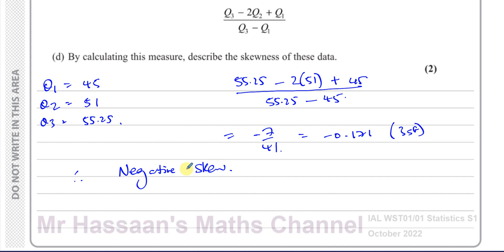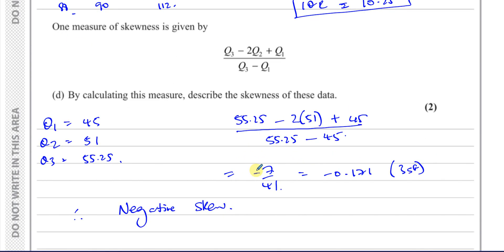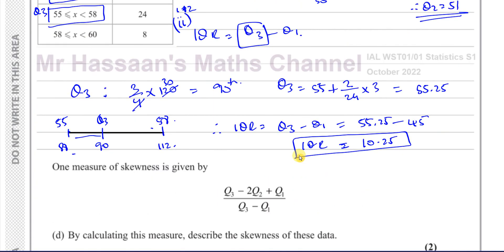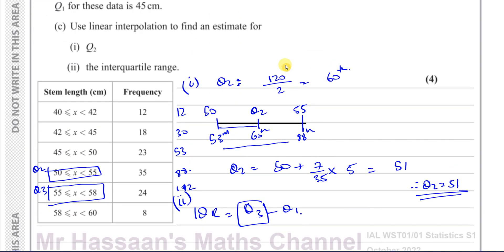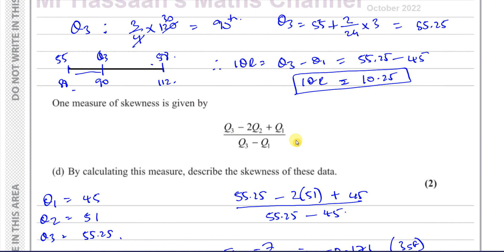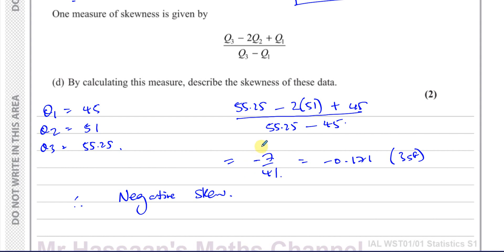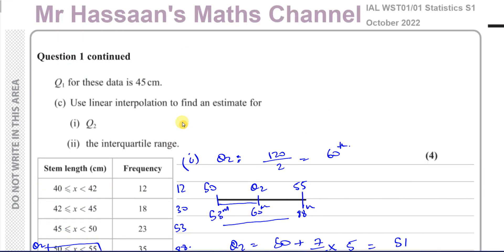That's the answer to question number one from this paper — October 2022 — which is pretty straightforward using a bit of proportion, linear interpolation, and a given formula to work out the skewness. Other questions from this particular paper can be found in the playlist, and questions from this topic — histograms, linear interpolation — will be found in the other playlist. You can subscribe to my channel by clicking the link. Thank you for watching and see you soon.